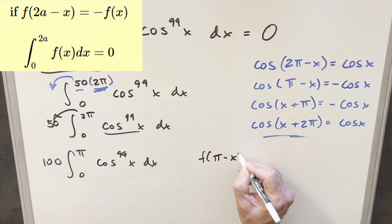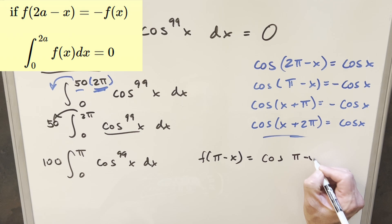Same kind of thing, f of pi minus x. You kind of notice this is a little redundant doing this twice, but let's just do it. So when we do this, we're going to have cosine pi minus x.